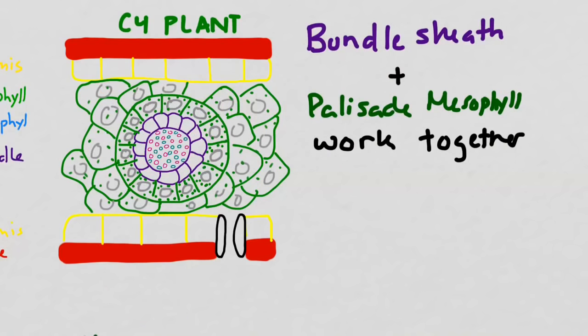Notice also that the bundle sheath cells and the palisade mesophyll cells are packed very closely together. Now we've been very familiar with the palisade mesophyll, and we've also been looking at the chloroplast in a lot of detail. But bundle sheath cells are going to become very important in a C4 plant.